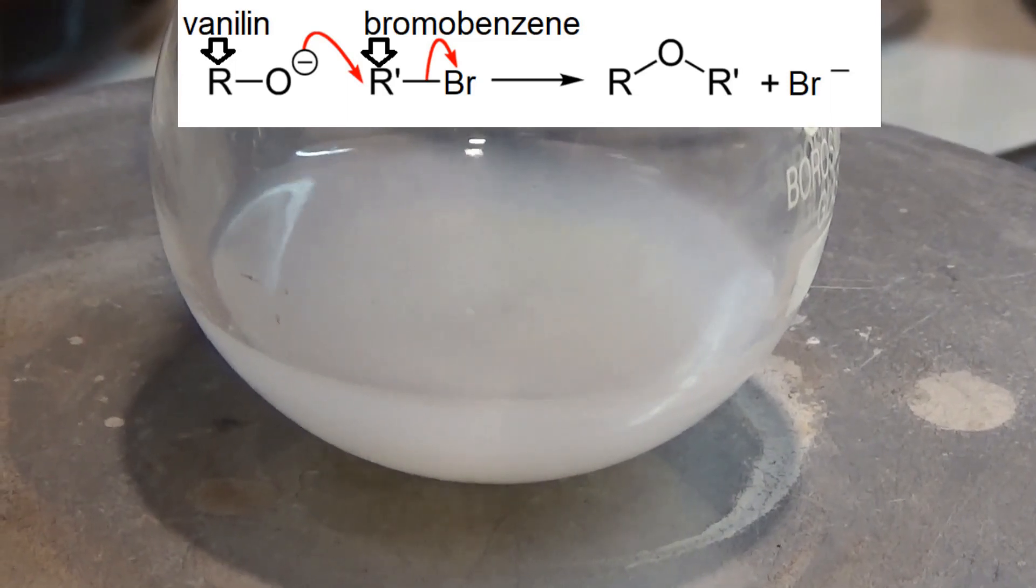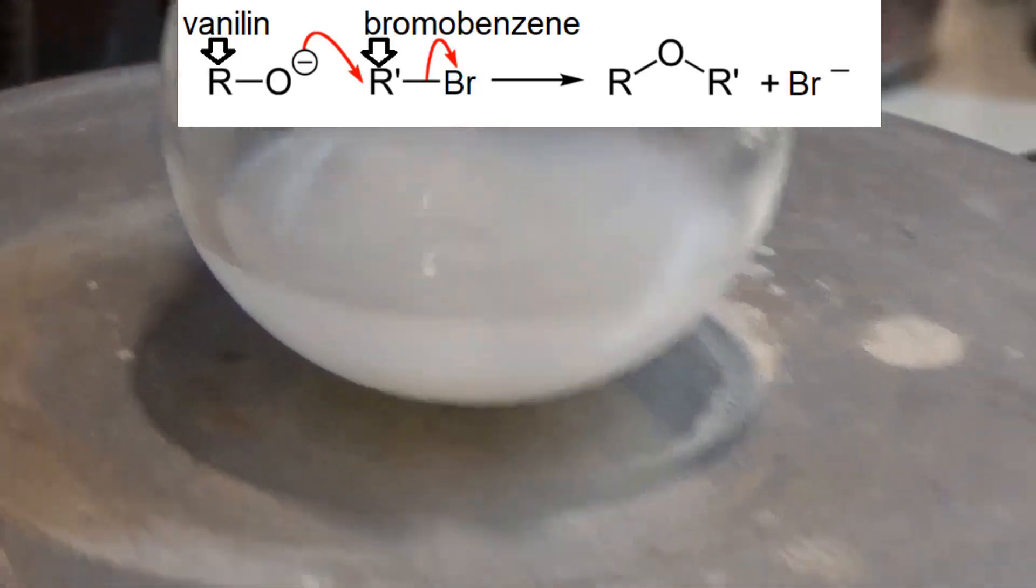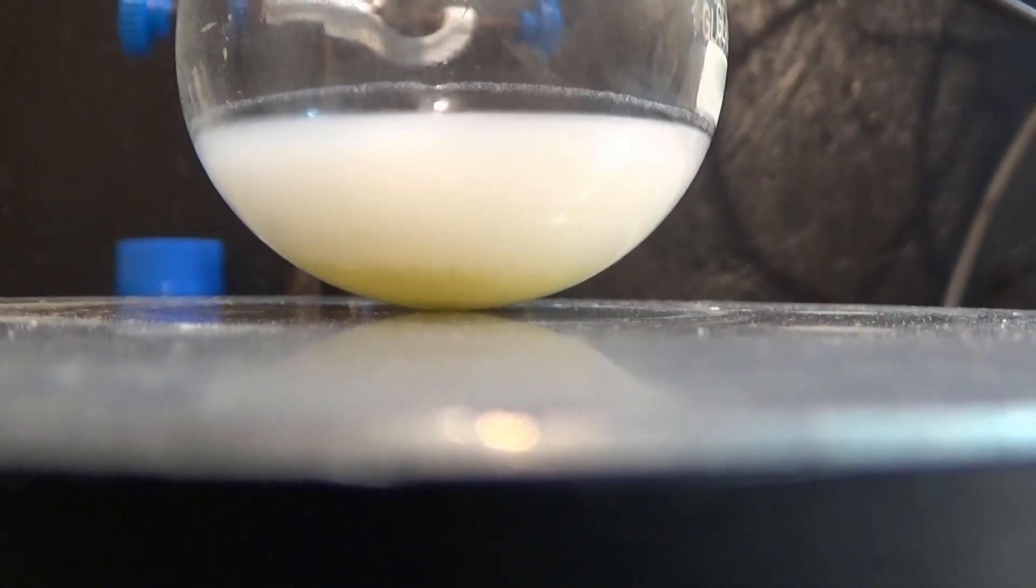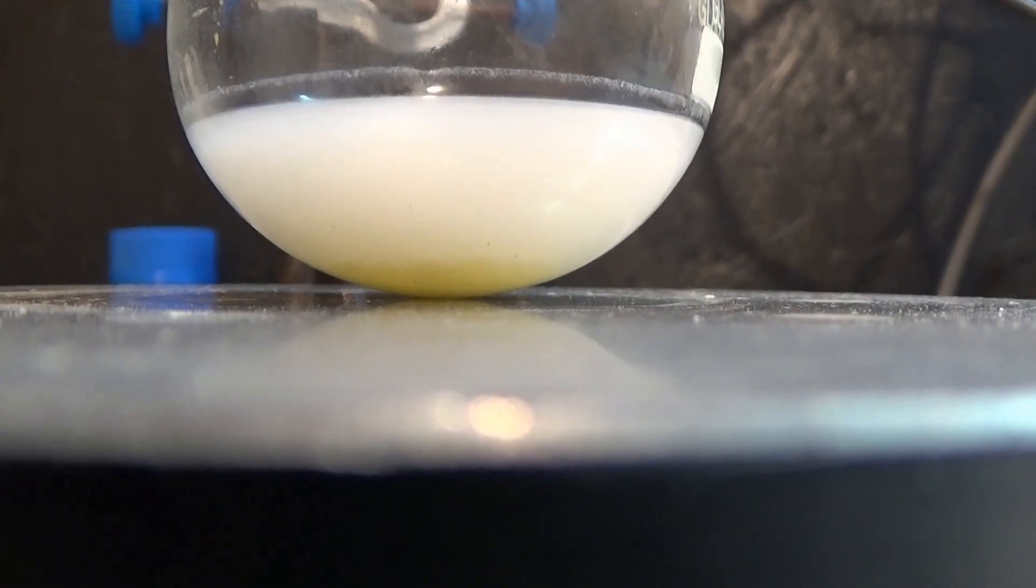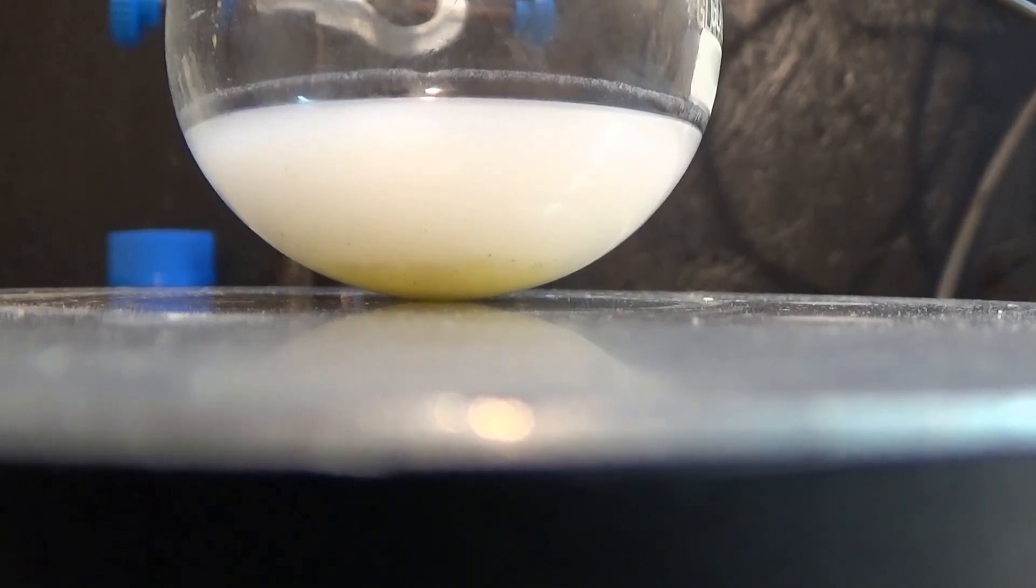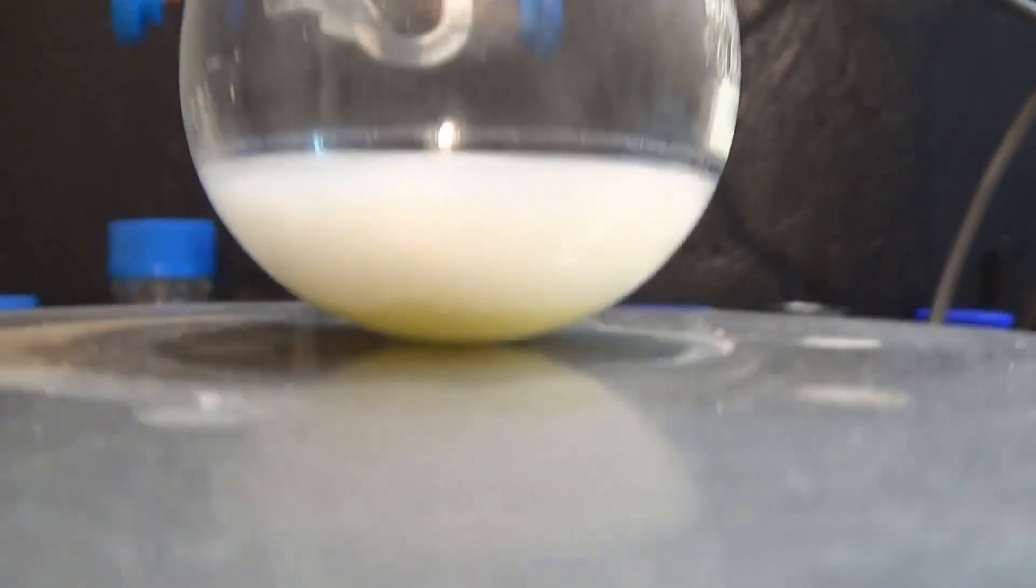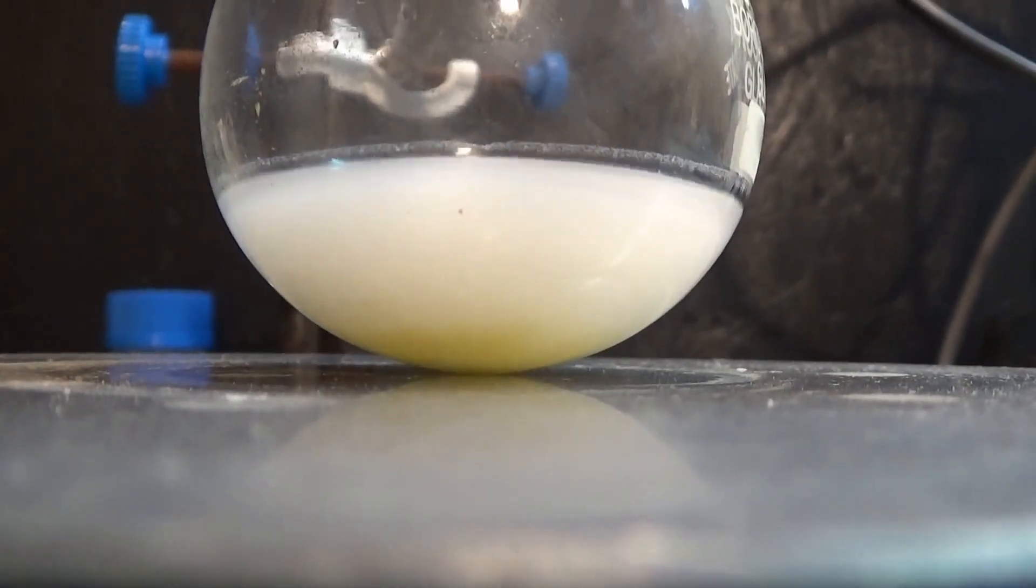The so formed alkoxide then attacks the carbon with the leaving group which in our case is the carbon linked to the bromine atom in the bromobenzene. The bromine then leaves the carbon and the oxygen of the nucleophile bonds with the former halide carbon.